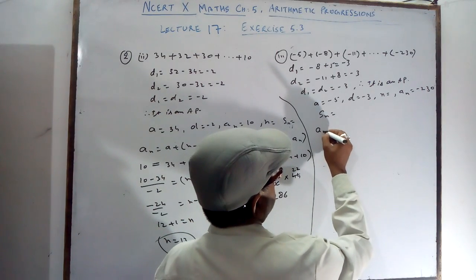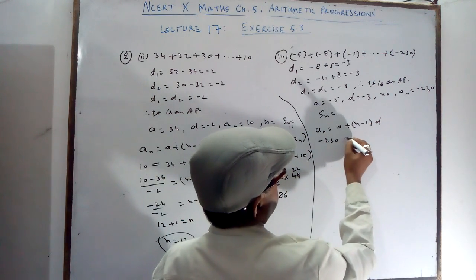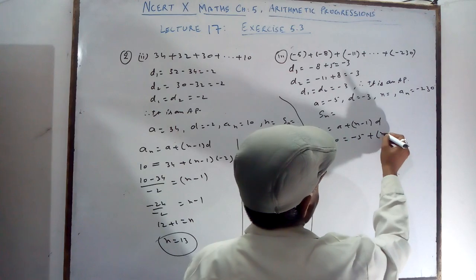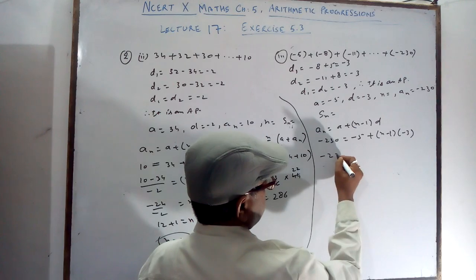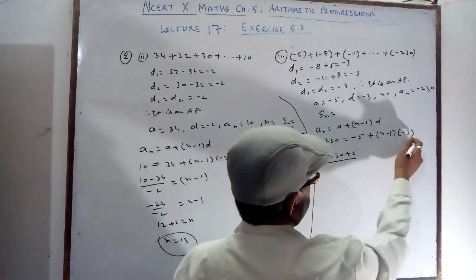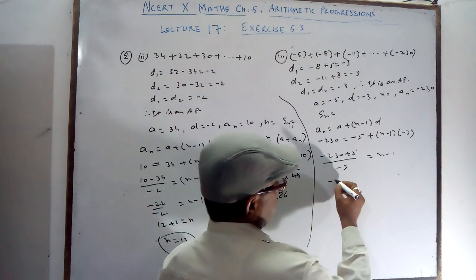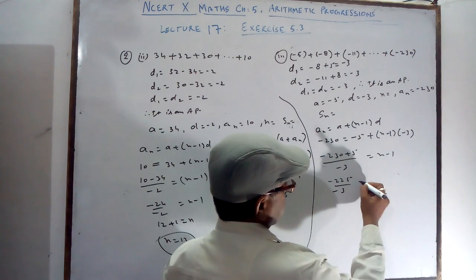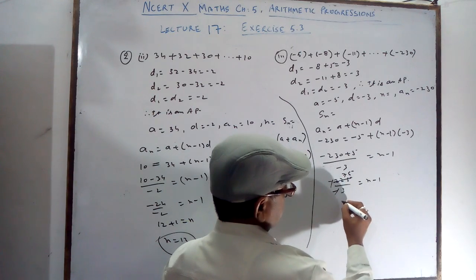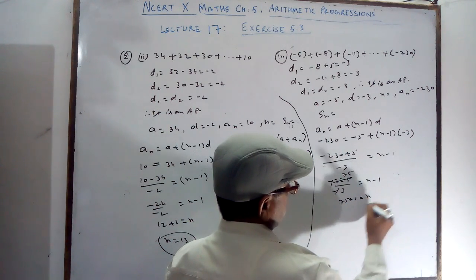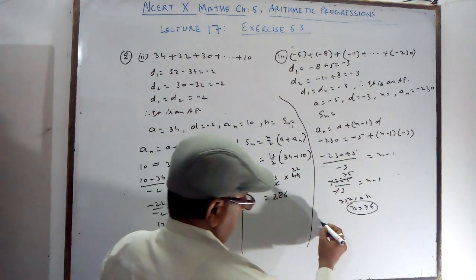Using the formula AN equals A plus (N minus 1) into D: minus 230 equals minus 5 plus (N minus 1) into minus 3. So (minus 230 plus 5) divided by minus 3 equals N minus 1. That gives minus 225 divided by minus 3 equals 75, so 75 plus 1 equals N, meaning N equals 76.